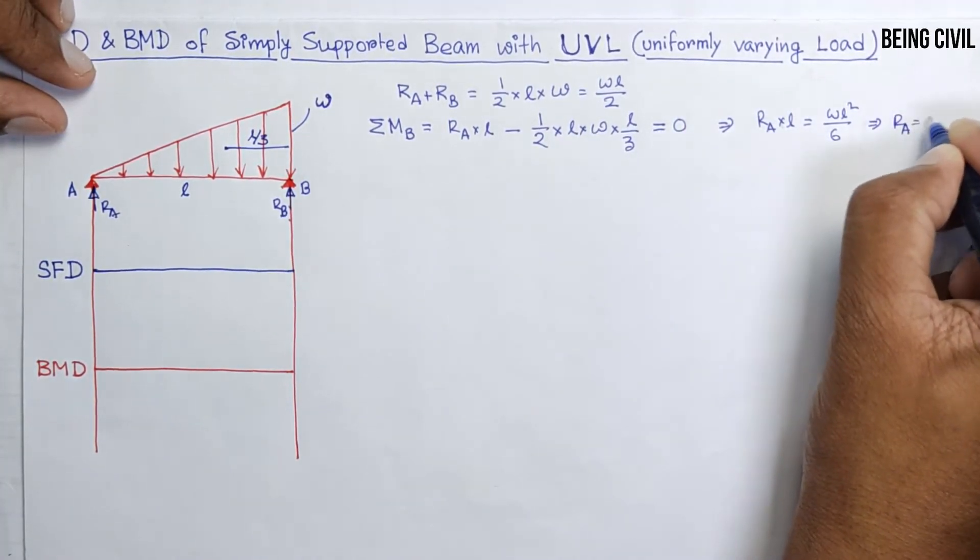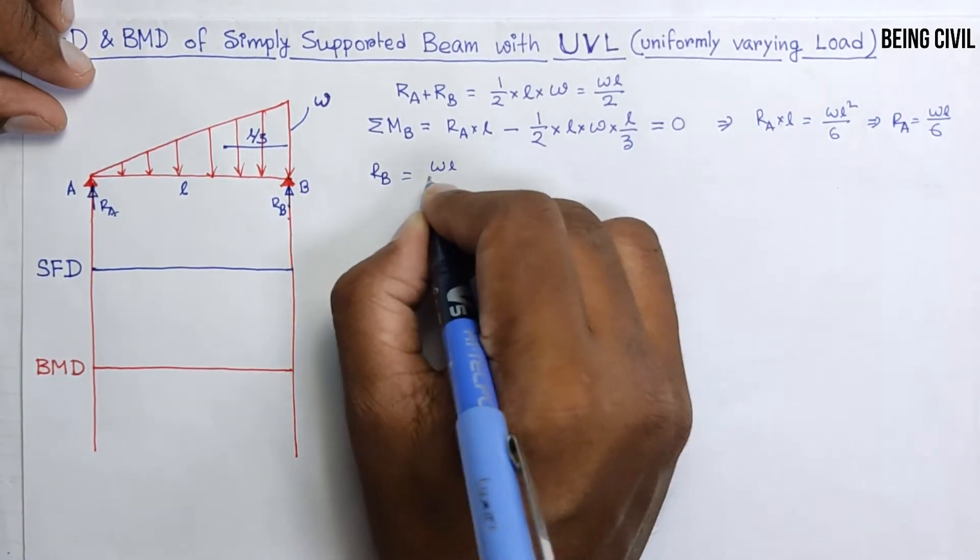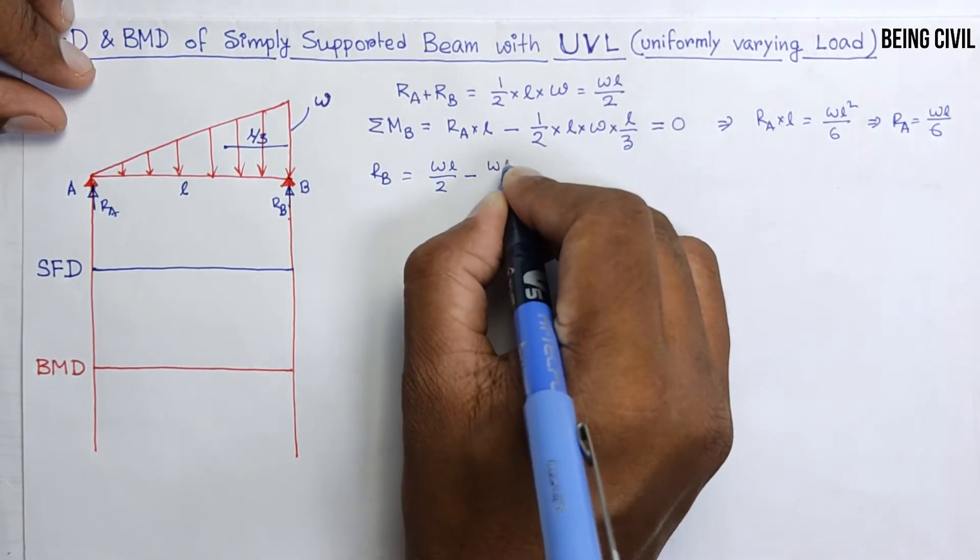So RA equals WL by 6. Now RB will be equal to WL by 2 minus WL by 6, which is WL by 3. So you got RA and RB.